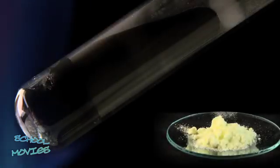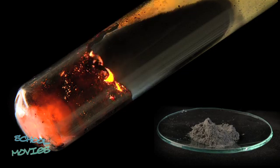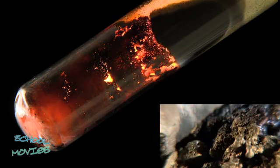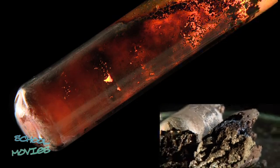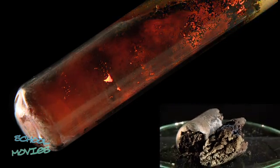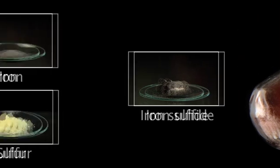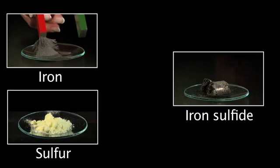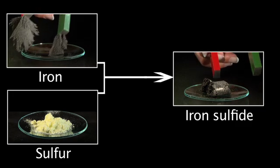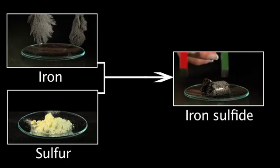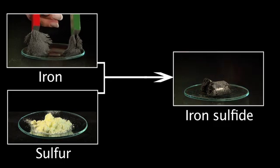If, for example, sulphur is heated together with iron in a test tube, the two substances react to form iron sulphide. Not only does its appearance indicate that the resulting black iron sulphide is a new substance, but other characteristics also prove that in this chemical reaction a new substance has been formed. Such a production of a new substance is also referred to as synthesis.